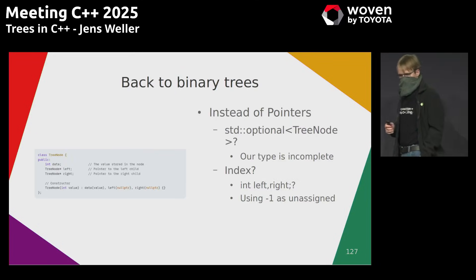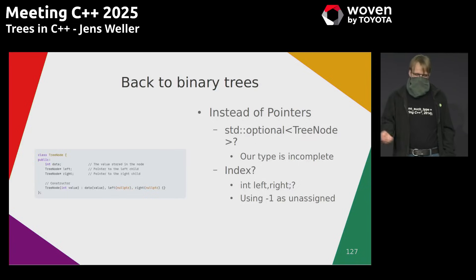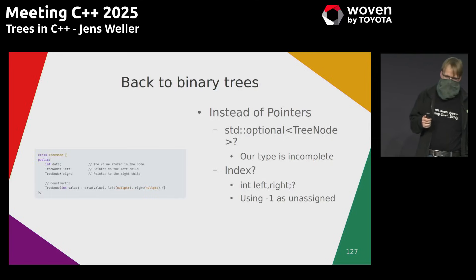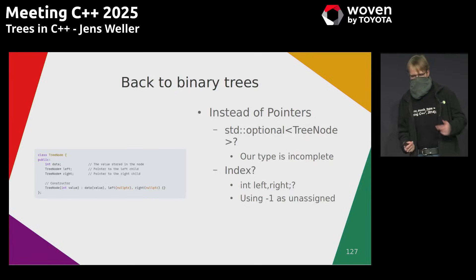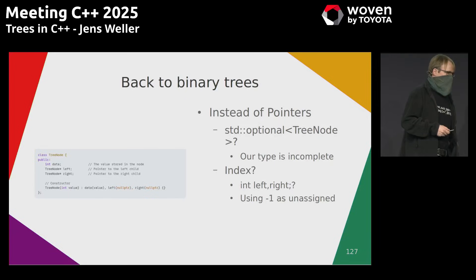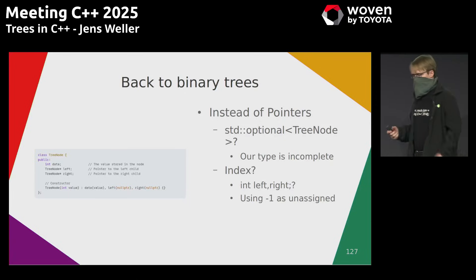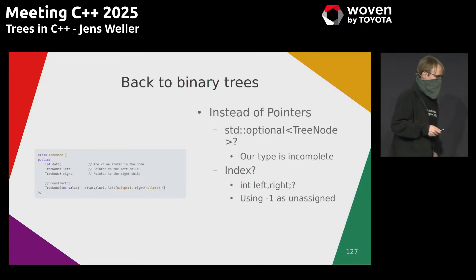In a binary tree you might use shared_ptr or unique_ptr for the nodes. Instead of pointers you might try std::optional, but that wouldn't work because the type is incomplete — you can't reference your own type inside an optional. However, using an index — like 'size_t left, right' — is possible. You could also use optional<size_t> to get a null value. For a simple test, you can just use minus one as the null value with a plain integer.